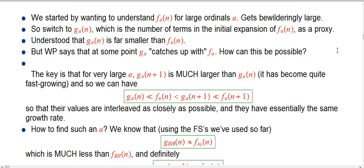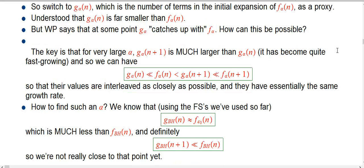When we use the ordinal collapsing functions for that, we figured out that g_BH(n) is approximately f_ε₀(n), and that's, by any mortal standards, that's really a fast-growing function, but it's a heck of a lot less than f_BH(n), and this was still in the regime where we consider the g to be a very pale shadow of f.